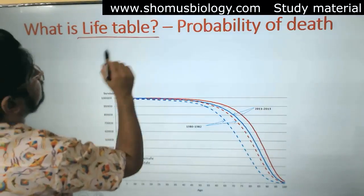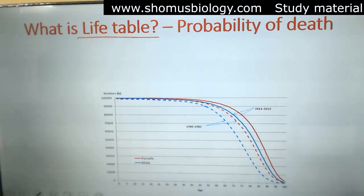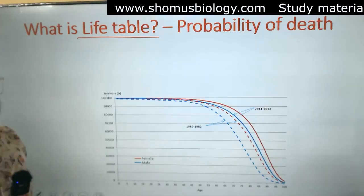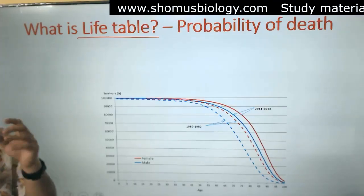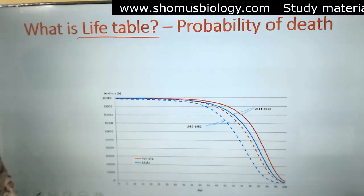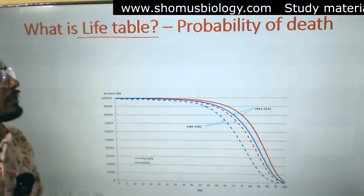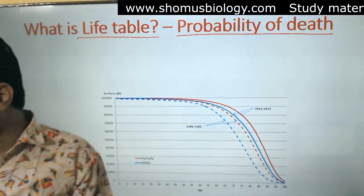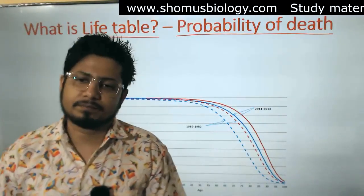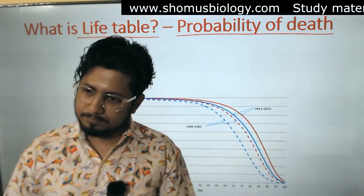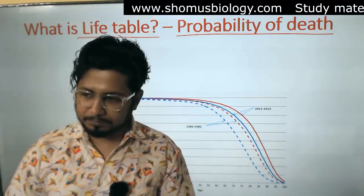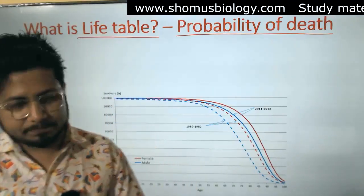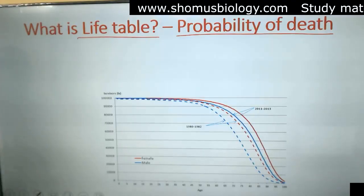The concept is life table. What is a life table? A life table can also be understood as a probability of death. So when we study population, we study the growth, and now we'll study the death. What is the probability of death of an organism? Can we find that from the life table?